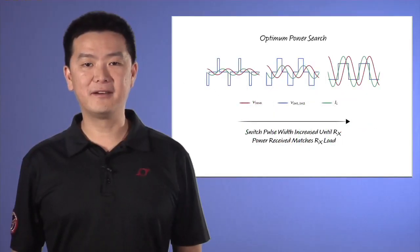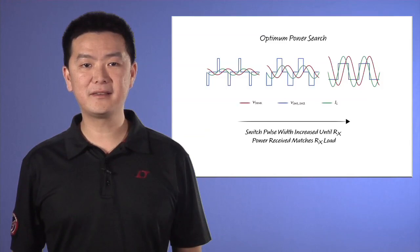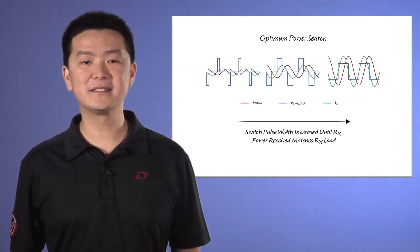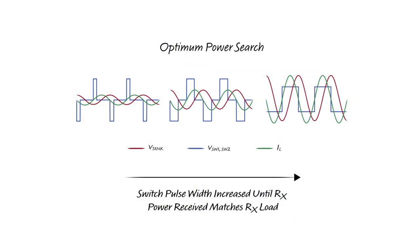The LTC4125 also adjusts the pulse width of the waveform across the series LC network by varying the duty cycle of the full-bridge switches. By adjusting the duty cycle higher, more current is generated in the series LC network, and therefore more power is available to the receiver load.